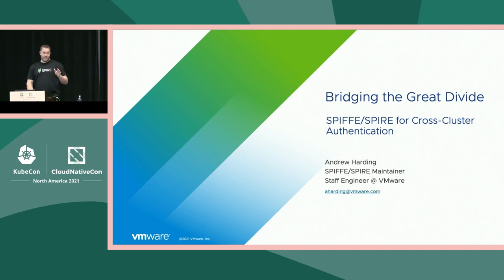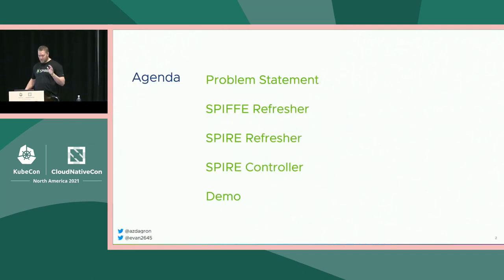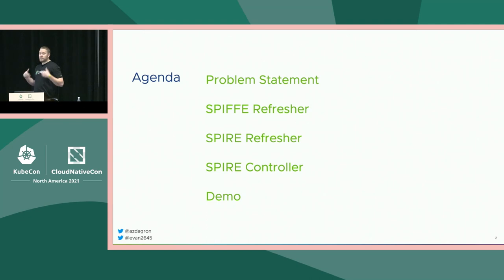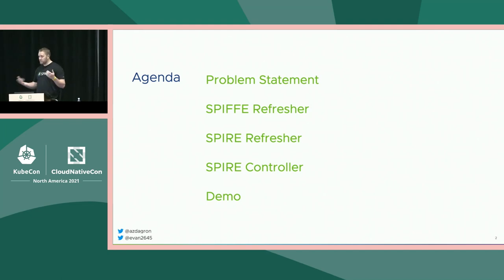We've got a lot to get through today. Our agenda is fairly short but each of these sections is going to be meaty. We're going to go over our problem statement, make sure we're all on the same page. We're going to do a very quick refresher of SPIFFE and SPIRE to set the stage for the Kubernetes controller work that we're doing, and to demonstrate accomplishing cross-cluster authentication using SPIFFE and SPIRE in this Kubernetes controller work.